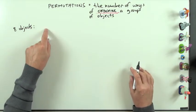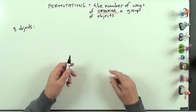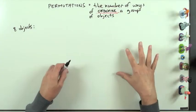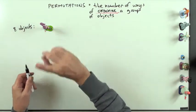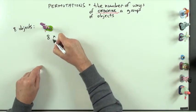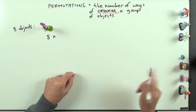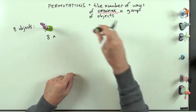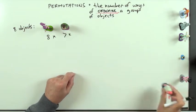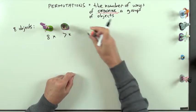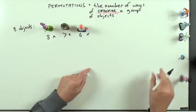Well, for the first one, there's eight of them, so you've got eight choices for the first one. Let's pick Leila — Leila can come in there. That leaves only seven left, so there's seven choices now. Then Hermes — six choices left. Then Dr. Zoidberg — five choices left.